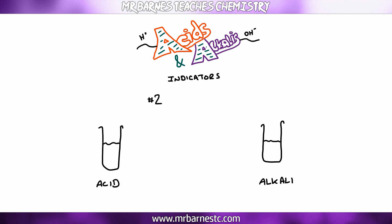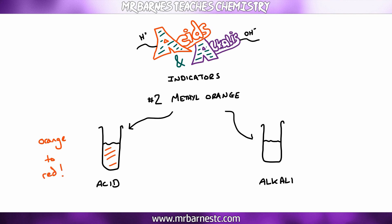The second indicator is methyl orange. As you can guess from the name, methyl orange is orange. When put into an acid it goes from orange to red. When put into an alkali it goes from orange to yellow.